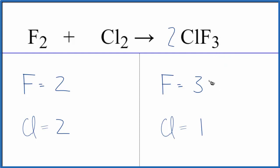So, three times two, that'll give us six. And then one times two, that'll give us two. So, the chlorines, those are balanced.